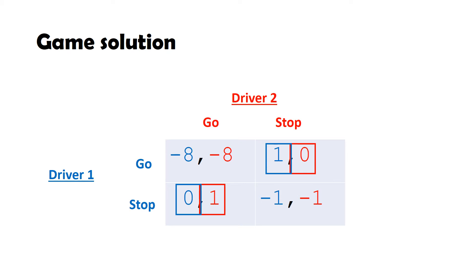Remember, the square showed what action would bring them the highest individual utility, given what action the other chooses. So we can say that the mutual best response occurs when one player goes and the other stops.